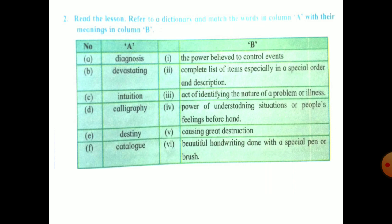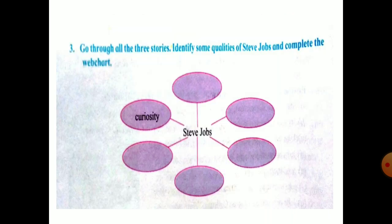Next question: read the lesson, refer to a dictionary and match the words in column A with column B. First word is diagnosis, its answer is act of identifying the nature of a problem or illness. Next word, devastating, its answer is causing great destruction. Then intuition means power of understanding situation or people's feeling beforehand. Then calligraphy means beautiful handwriting done with special pen or brush. Then destiny means the power believed to control events. And last word is catalog, means complete list of items in special order with description. Third question: write down the qualities of Steve Jobs. This is the web chart. First quality given here is curiosity, second one is intuition, then self-confidence, intelligence, determination and courage. These are the qualities of Steve Jobs.